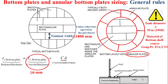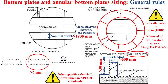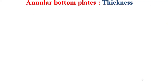As general rules, the bottom plates or the annular bottom plates should provide an outside width no less than 50 millimeters projected outside the shell. The annular bottom plates shall have an inner radial width that provides at least 600 millimeters between the inside of the shell and any lap welded joint in the remainder of the bottom. Other specific rules should be examined in the API 650 standards.